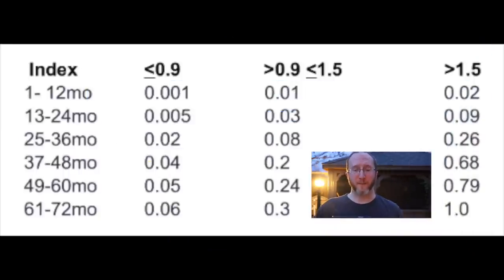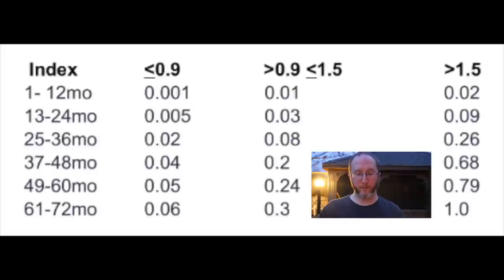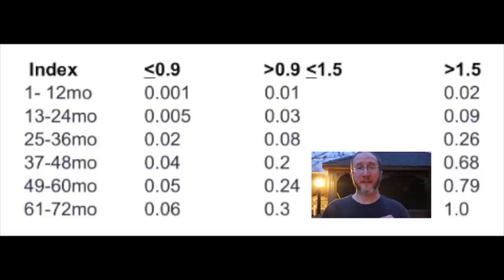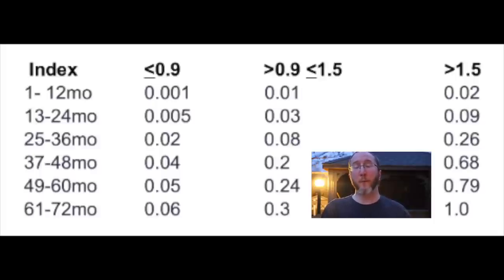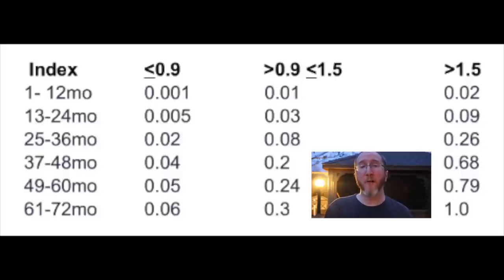In the first column you see months: month 1 through 12 is the first year, month 13 through 24 is the second year, and so on up to month 72. The second, third, and fourth columns show the different optic densities, or index — the level of JC virus antibody. If you're antibody negative, you can't use this table because you've never been exposed to the virus. If you're antibody positive and haven't had chemo, you can use the table. A level below 0.9 is considered low, between 0.9 and 1.5 is medium, and above 1.5 is considered high.